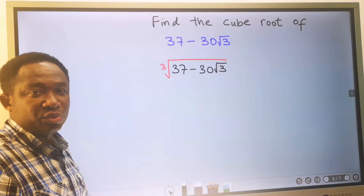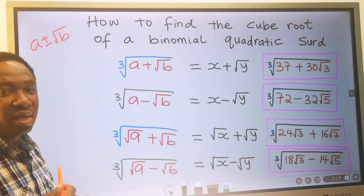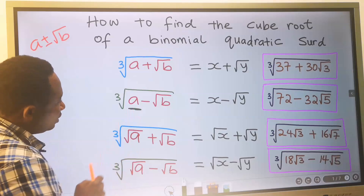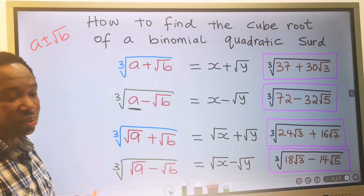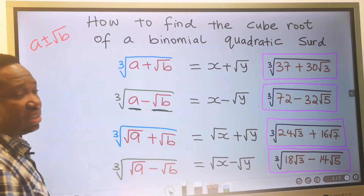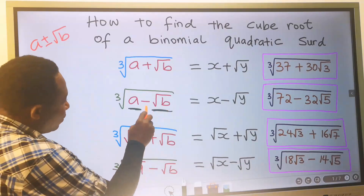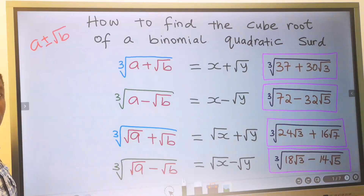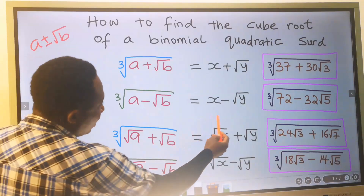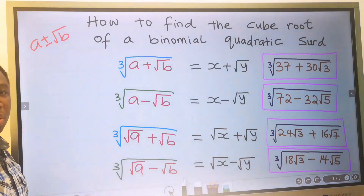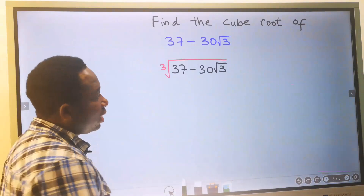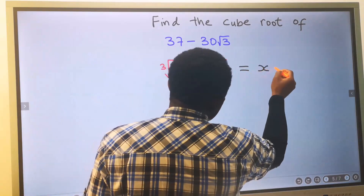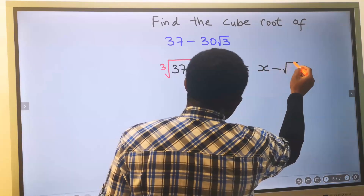Step number two, we're going to consider the condition where the first term is not having a square root, but the second term is having a square root, separated by a minus. In such a condition, our answer will be x minus the square root of y, and here I will have my answer to be x minus the square root of y.